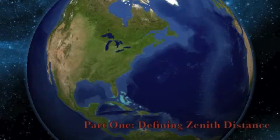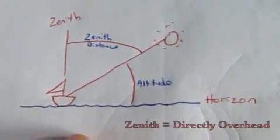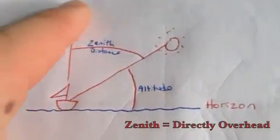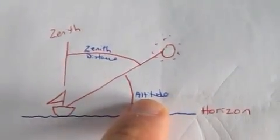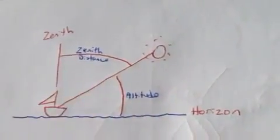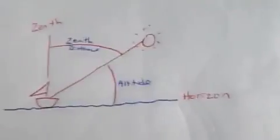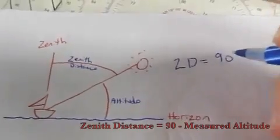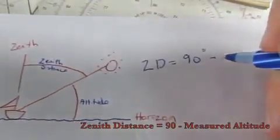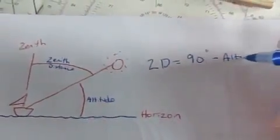First thing we need to talk about is something called Zenith Distance. The Zenith is the spot that is directly over your head. And now when we do celestial navigation, we measure the distance from the horizon to the sun or the stars, but what we're actually interested in is the Zenith Distance. And the way to do that is to do 90 minus the measured altitude equals Zenith Distance. So you measure something with the sextant, 90 minus that is Zenith Distance.